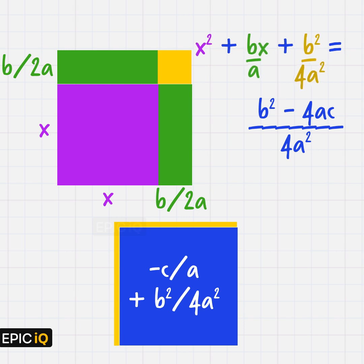The area on the left-hand side now, after completing the square, will be the square of its sides, which is now x + b/2a.